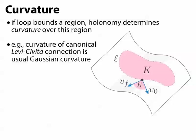For instance, every surface comes with a canonical connection called the Levi-Civita connection, where the curvature is just the usual Gaussian curvature.